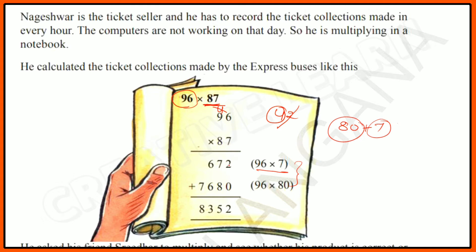Now multiply 96 × 80. Since 8 is in the tens place, write 0 in the ones place first. Then 8 × 6 = 48, write 8 and carry 4. Then 8 × 9 = 72, plus carry 4 = 76. So 96 × 80 = 7680.